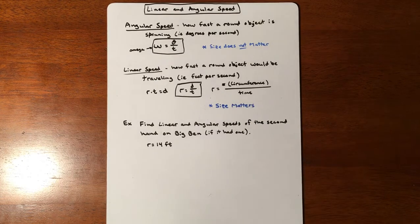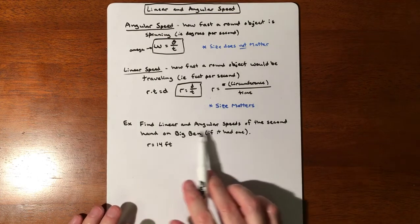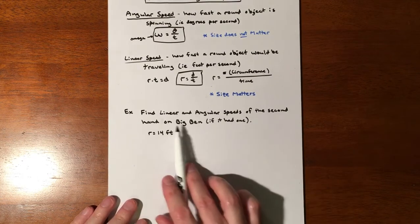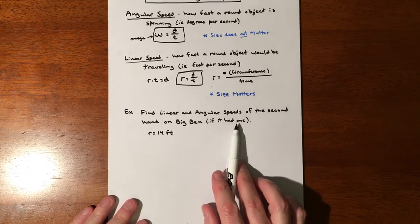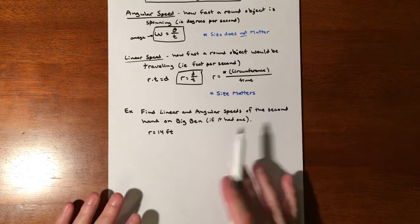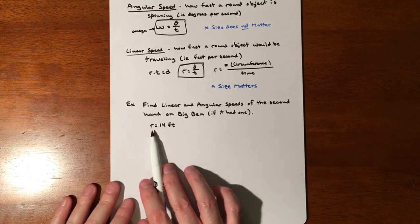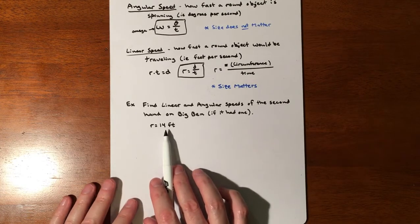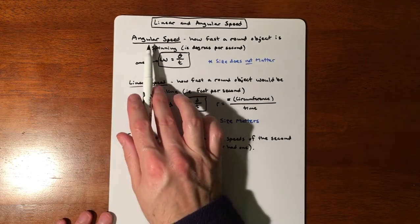We have two examples. One of them is if we're trying to find the linear and angular speeds of the second hand on Big Ben. It doesn't have a second hand, but if it did, how fast would it be traveling? We need the fact that the radius is 14 feet. Angular speed does not need that, doesn't care.